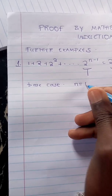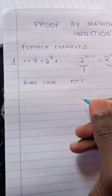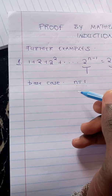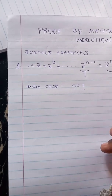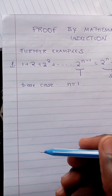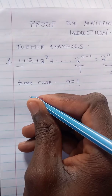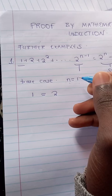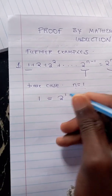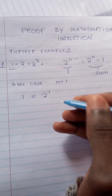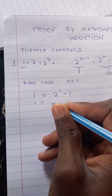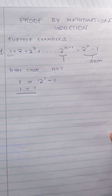We let n be equal to one. For n equal to one, the sum of the first terms using that formula is going to be equivalent to that part. Our first term is one, and it's supposed to equal the formula with n equal to one: two raised to the power of one is two, minus one is one. So it's true for the base case.